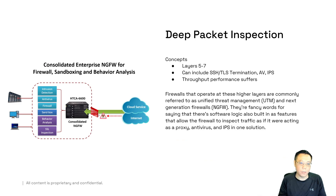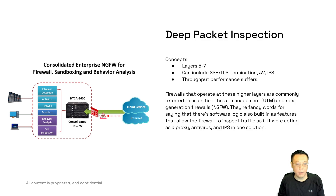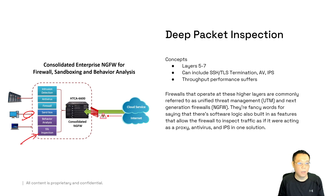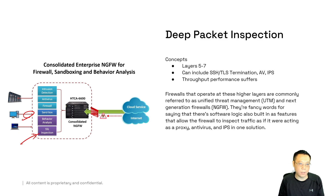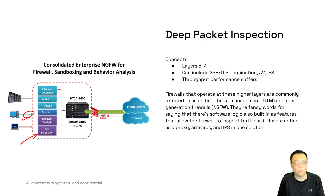Deep packet inspection operates at Layers 5 through 7. Vendors like Palo Alto and Sourcefire (Cisco ASA) understand the application level. Features may include intrusion detection and prevention, antivirus, sandbox-based malware analysis of binary captures, behavioral analysis, and SSL inspection — also known as termination — where you decrypt traffic, terminate it on one side, and re-establish it on the back end. A single firewall, physically or virtually, acts as a unified threat management device, also called a next-generation firewall. Throughput does suffer because it's not as fast at lower layers, but you get more visibility and value out of a single appliance versus multiple appliances.